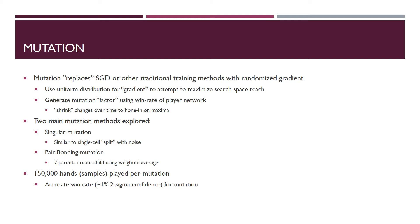We explored two main mutation methods. The first is singular mutation, similar to when a single-celled organism splits — we add a little noise to the weights, where that noise term is the random gradient. The second is pair bonding, where we take two highly performing parents, compute a weighted average of them, and add some noise. Each child played over 150,000 hands per mutation to get a fairly accurate win rate, giving about a 1% two-sigma confidence interval for that level of iteration per mutation.